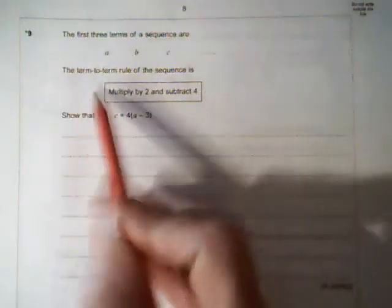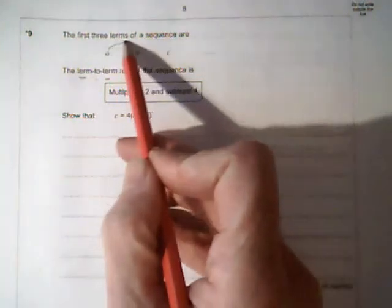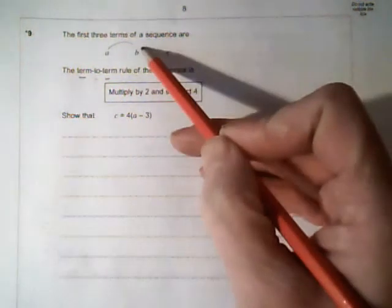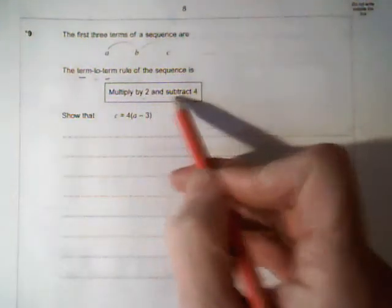Question number 9. The key thing to read is the term-to-term rule. That means going from one term to the next term. We multiply by 2 and subtract 4.